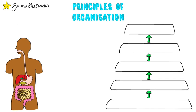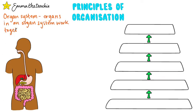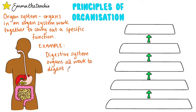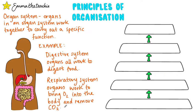Lots of organs combine to form an organ system. The organs in an organ system work together to carry out a specific function. For example, down here we've got a diagram of the digestive system — all its organs are working together to digest food. You've also got the respiratory system, whose organs work to bring oxygen into the body and remove CO2 from it.